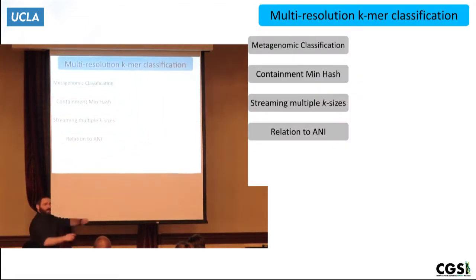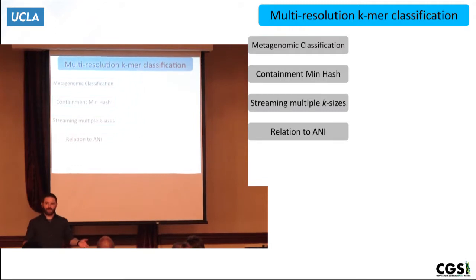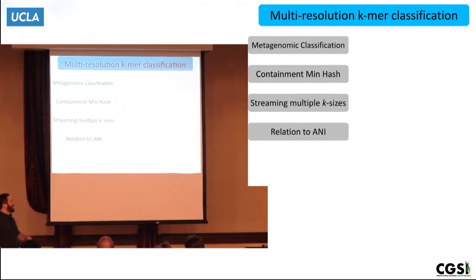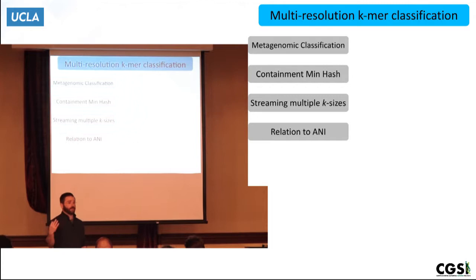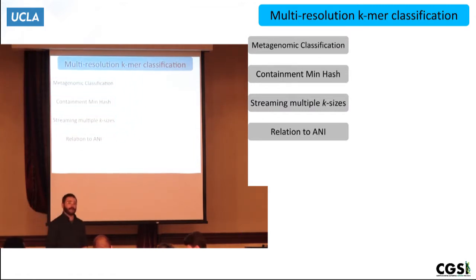The outline of the talk is as follows. First, I'm going to talk about metagenomics and what it is, then the problem I'm attempting to solve, then this cool computational technique called containment minhash, and how to make it work for a bunch of different K-mer sizes simultaneously. Then I'll relate it back to this quantity called the average nucleotide identity, or ANI for short.